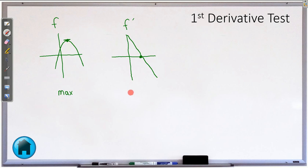So your derivative was positive, then it was 0 at our flat spot, and then the derivative was negative. That means the function was increasing and then decreasing — increasing and then decreasing.